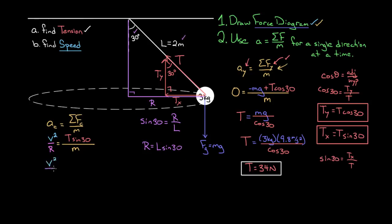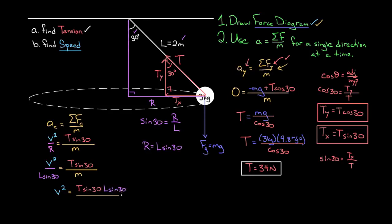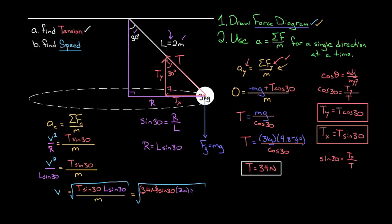Plugging back in: V squared divided by R (which is L sine 30) equals T sine 30 divided by mass. Multiplying both sides by L sine 30 gives V squared equals T sine 30 times L sine 30 divided by mass. Taking the square root: V equals the square root of (T sine 30 times L sine 30 divided by mass). Plugging in 34 Newtons, sine 30, two meters, sine 30, divided by 3 kilograms gives a speed of about 2.38 — call it 2.4 meters per second.